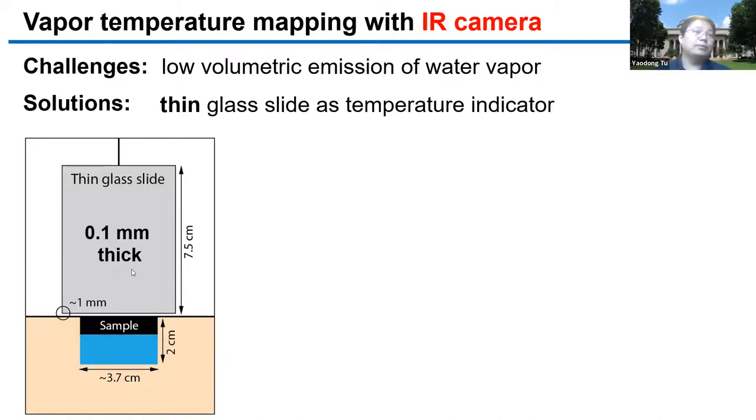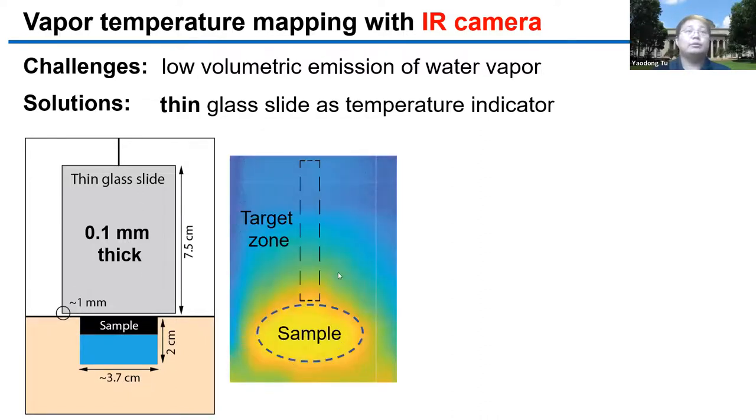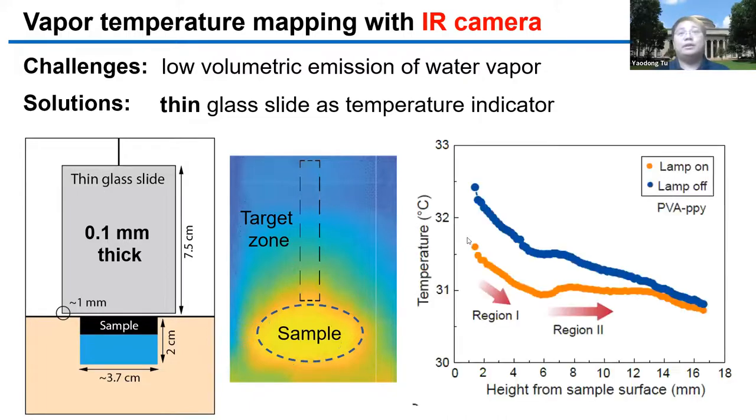After we get the IR image, we select a zone just over the center of the water surface with width of 5 mm and height of 5 cm. We do the temperature average at each height, and finally we can get the vapor temperature distribution in vertical direction. Thanks to its fast response, we can clearly see the temperature gradient change before and after light on.